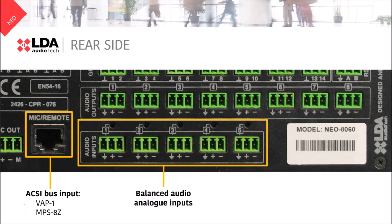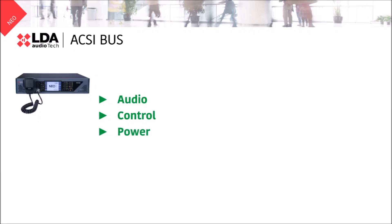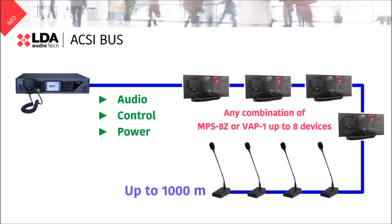Let's see it in detail. Into this bus you could connect in serial up to eight of the following devices: our multi-paging stations MPS8Z and our remote voice alarm panels VAP1. This bus will provide to these units audio, control, and power.